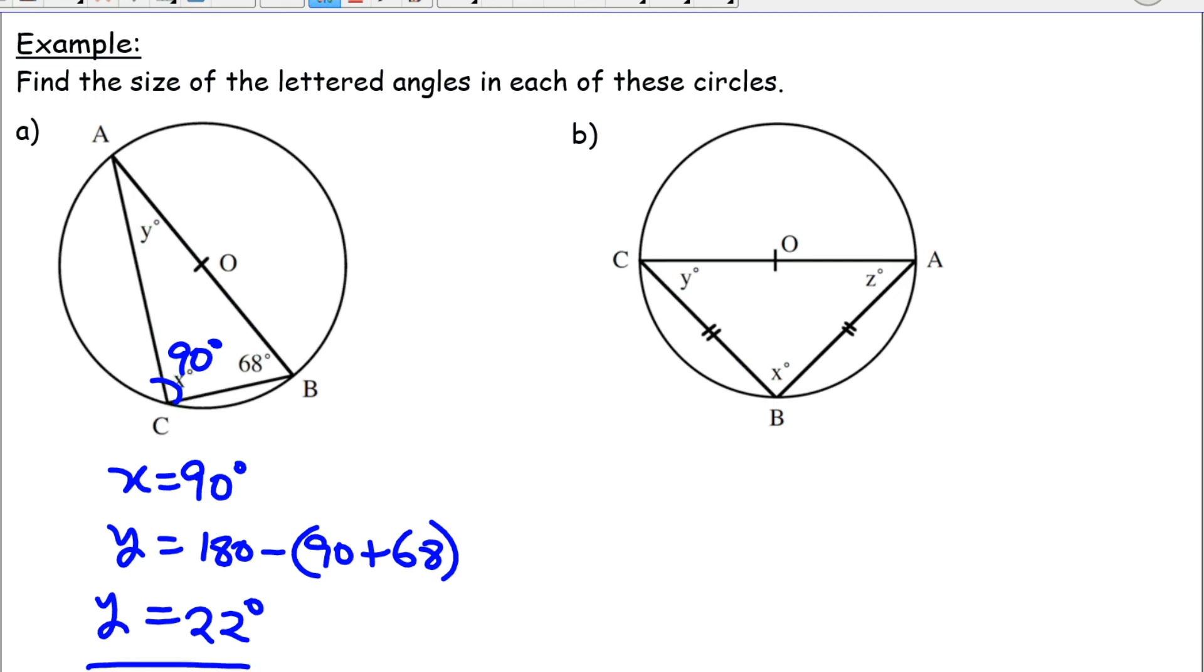Alternatively, here, we know that X will be 90 degrees. And this is an isosceles triangle. So, X is equal to 90 degrees.